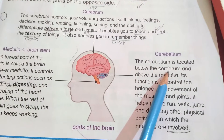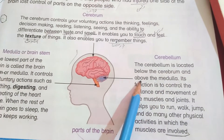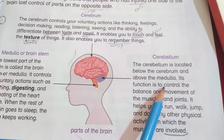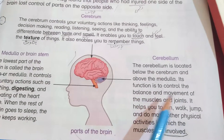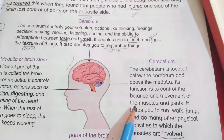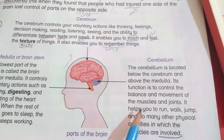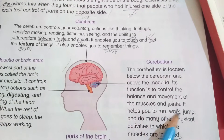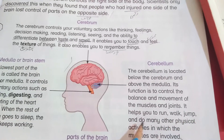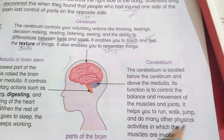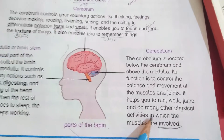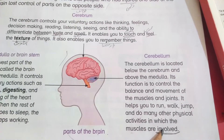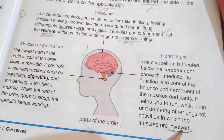The cerebellum is located below the cerebrum and above the medulla. Its function is to control the balance and movement of the muscles and joints. It helps you to run, walk, jump, and do many other physical activities involving the muscles.